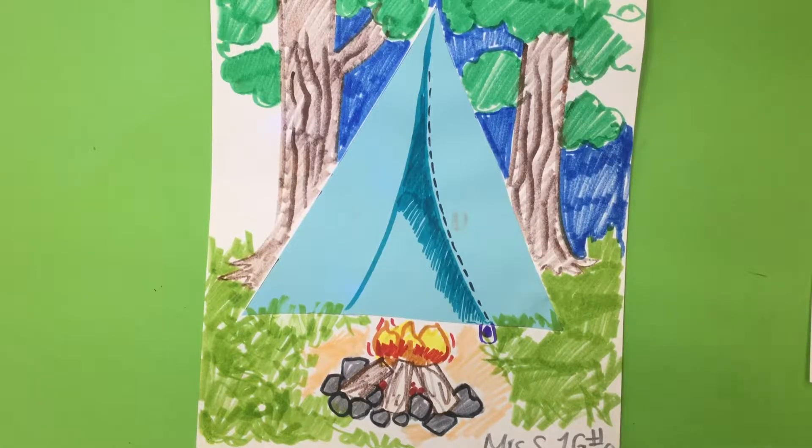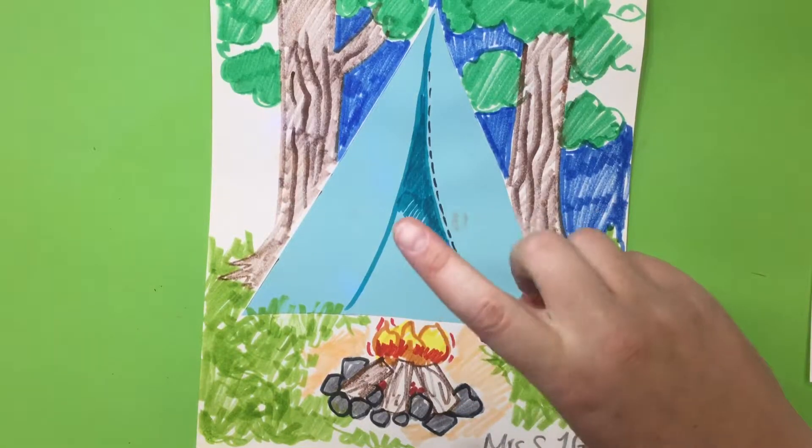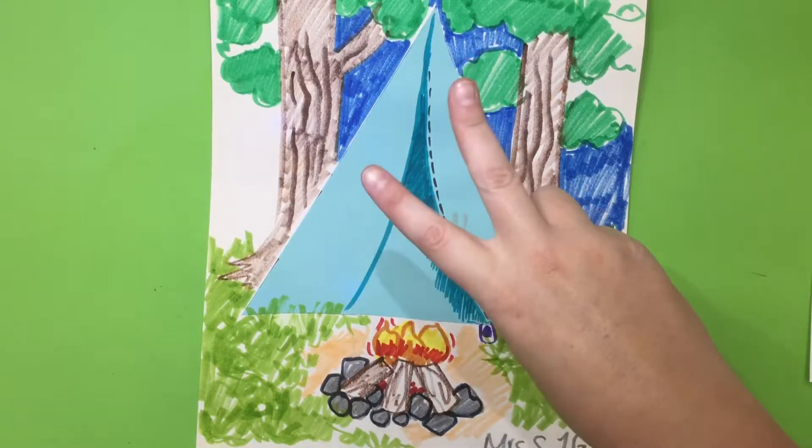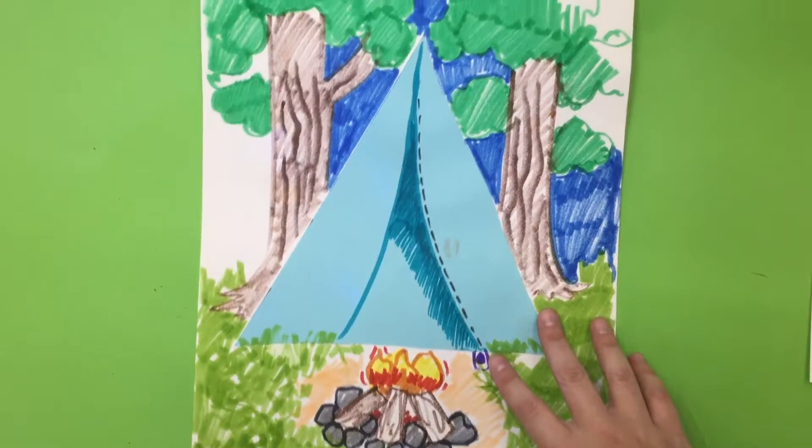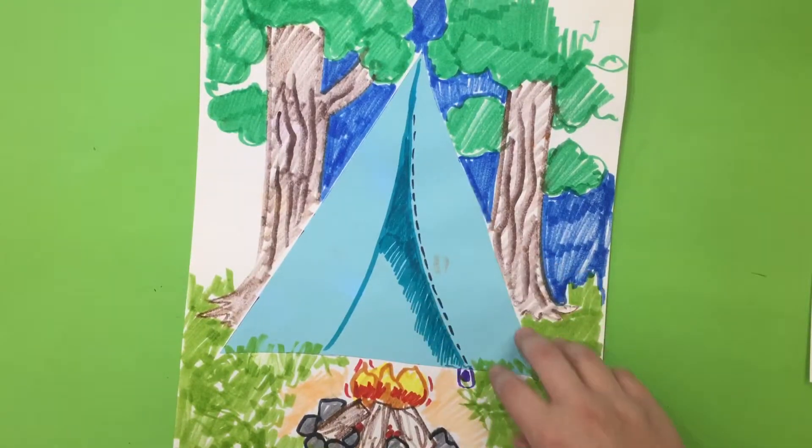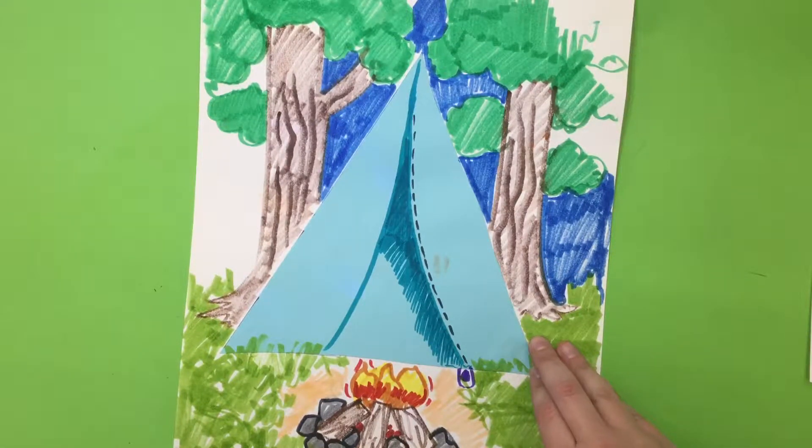We are going to focus on three different shapes today. Your basic ones: your circle, your square, and your triangle. And what we're going to be doing is creating those shapes and I'd like for you to think of one thing that that shape reminds you of from life.